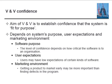Verification and validation confidence: the V&V process may involve software inspection and reviews. Inspections and reviews analyze and check the requirements, design, model, program, source code, and even the proposed system. These are static verification and validation techniques, in which you do not need to execute the software to verify it.